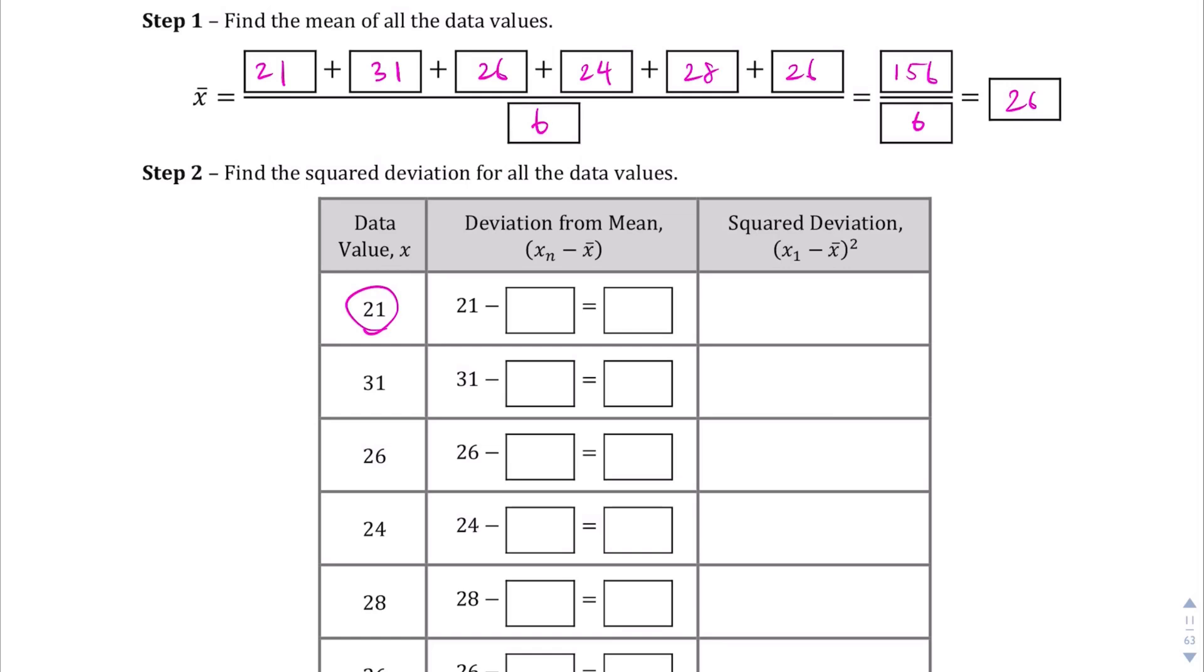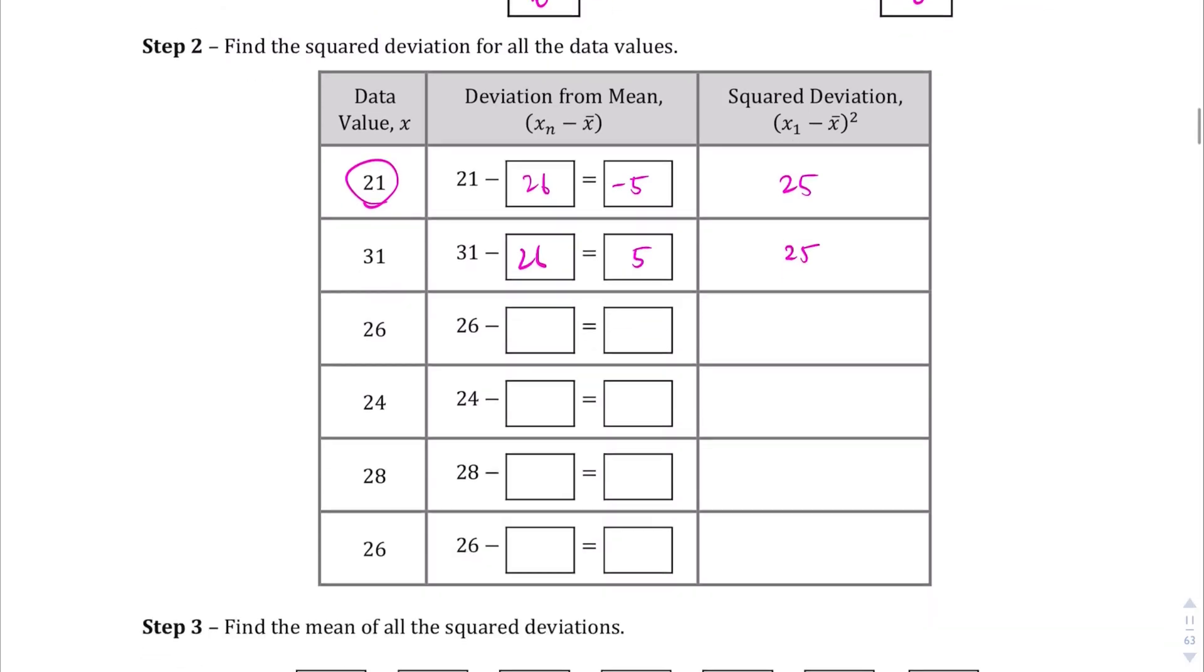We're going to do 21 minus the mean, which is 26. It gives us a negative 5. If we square the negative 5, we get 25. Since negative 5 times negative 5 gives us a positive 25. So, let's do that with the next number. 31 minus 26. That's also 5. Positive 5 squared is 25.